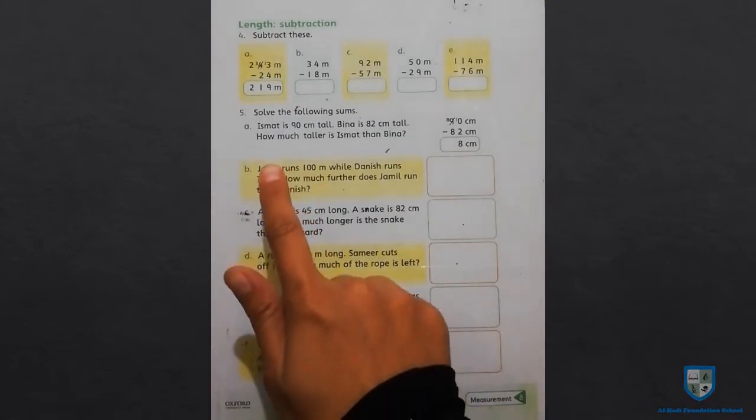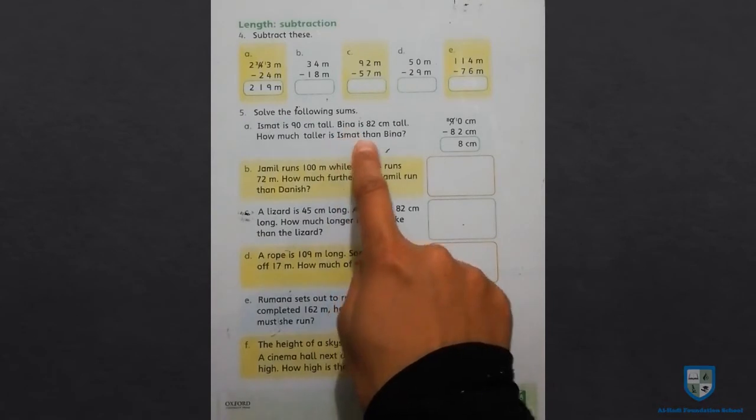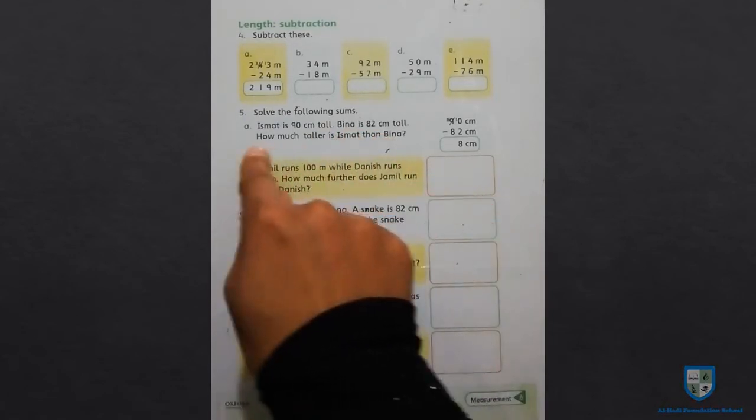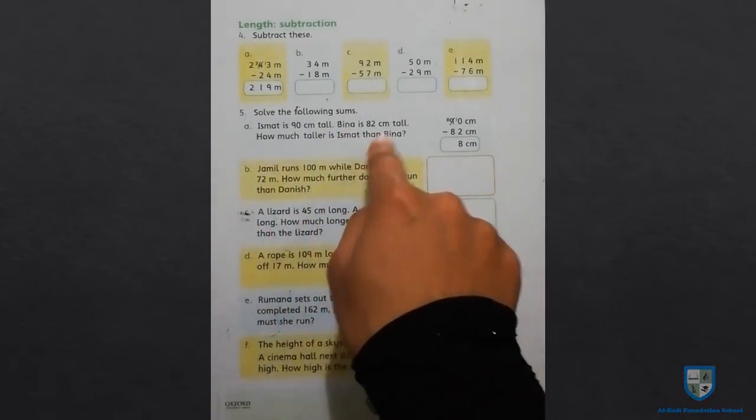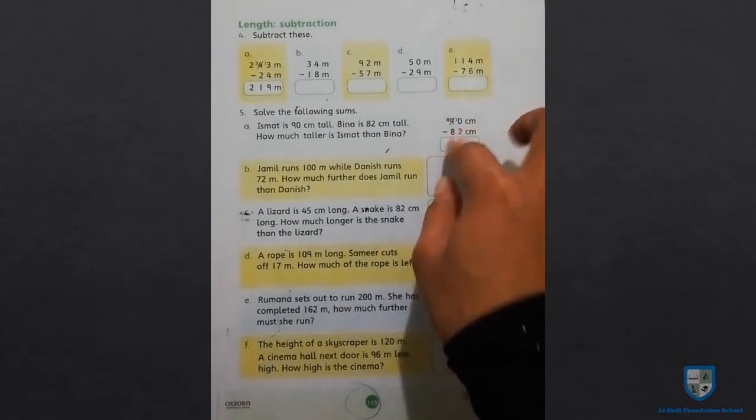Next is that Jamil can be 90 cm tall and Beena is 82 cm tall. How much taller is he than Beena? He can take it into a bit and he has subtraction.